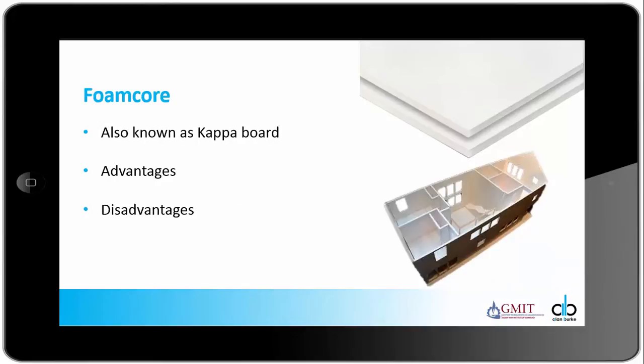This is foam core, also known as Kapabore. The advantage to foam core is that it has a thickness already — it's not as thin as paper or card. Some of the disadvantages: it can be quite expensive, with an A3 sheet costing about eight or nine euros. It also doesn't take finishes very well — if it gets glue or any form of wet paint or wet finish, it tends to warp.